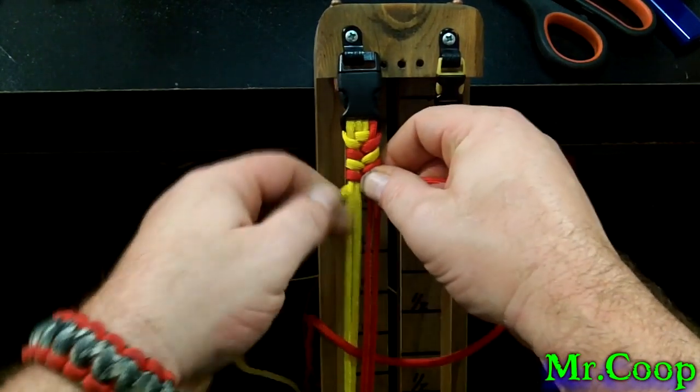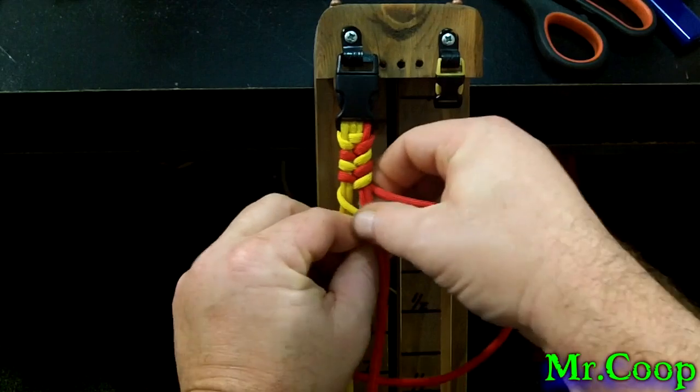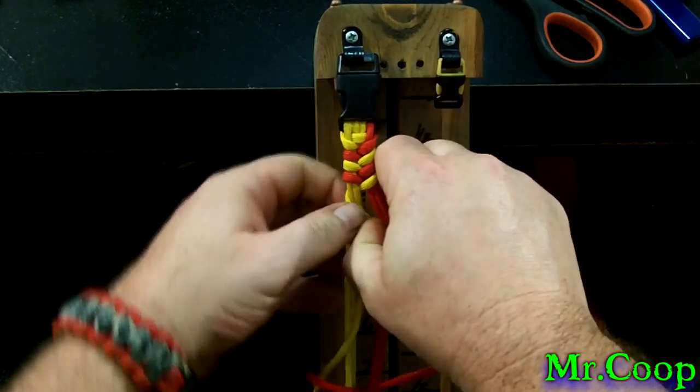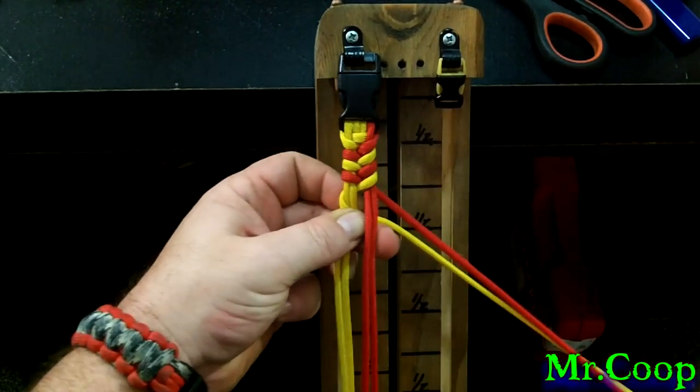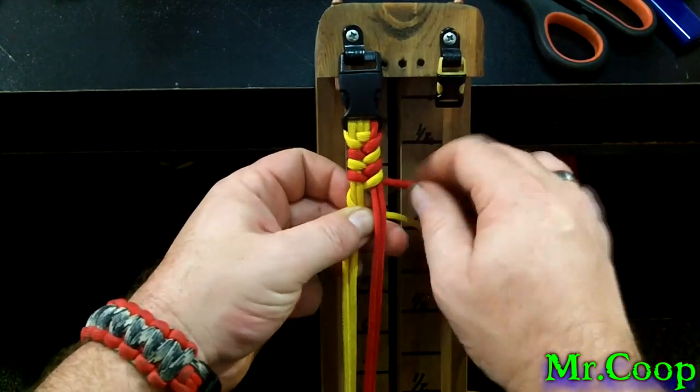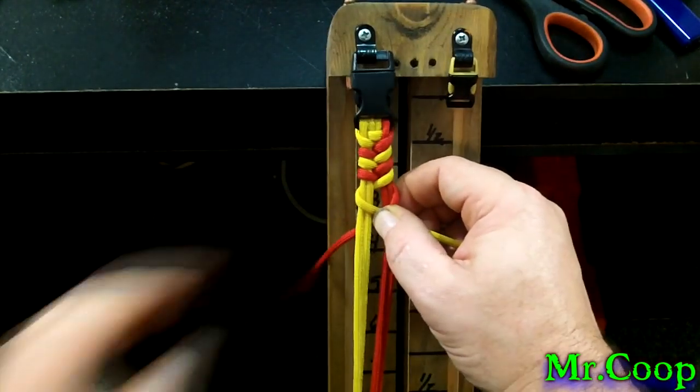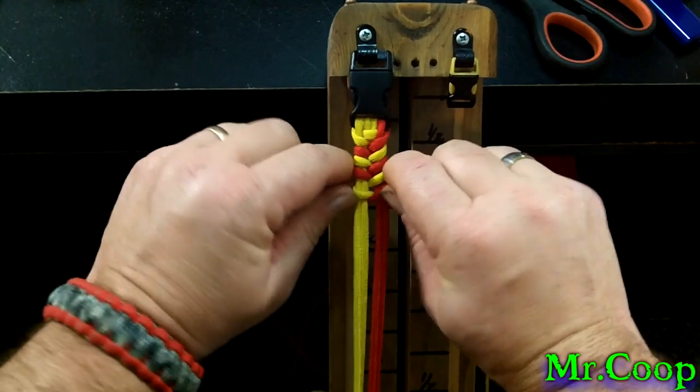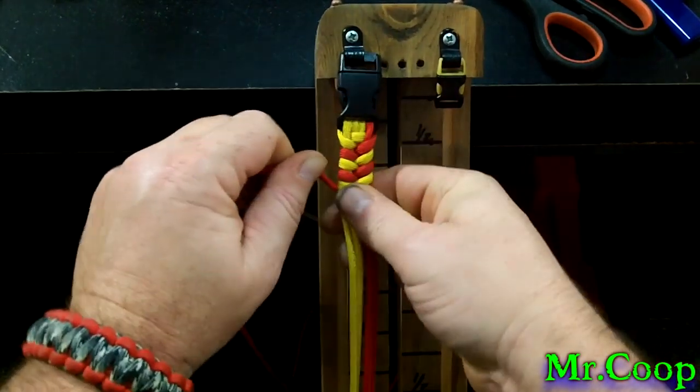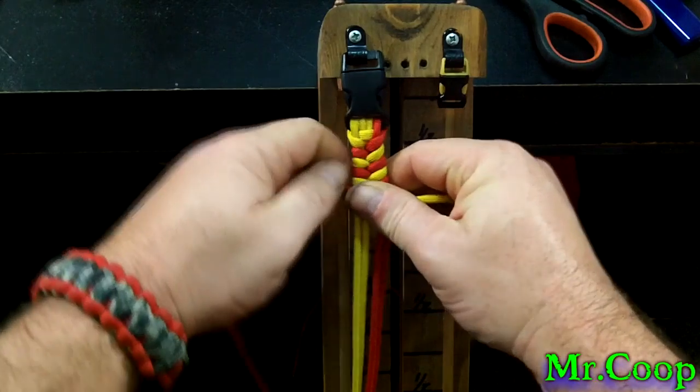Just remember, you keep tension on them. Go under with the yellow, over with the red. And as you're going, just keep pushing it up. Keep it tight.